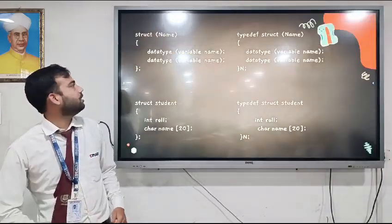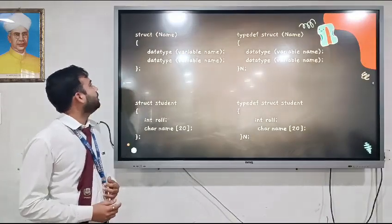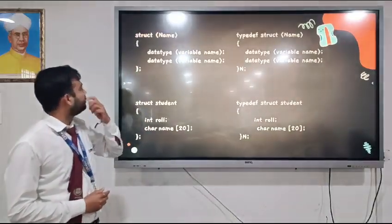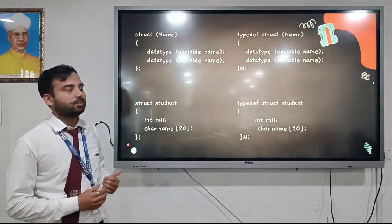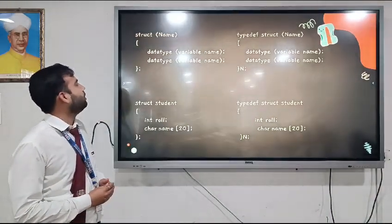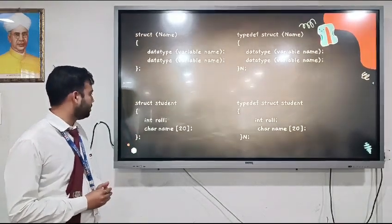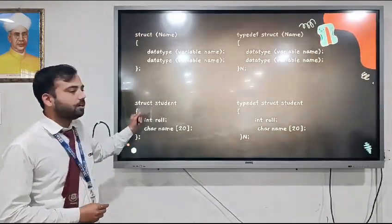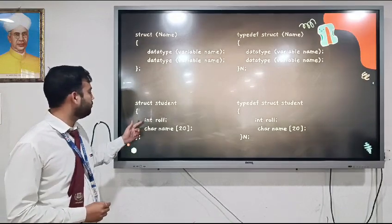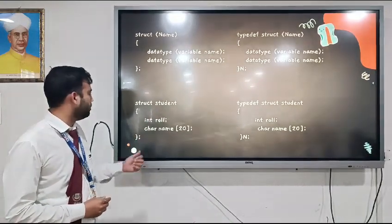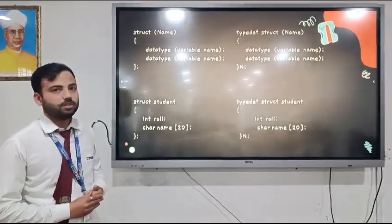Now we are moving to the syntax and the example of the structure. Here we can see the syntax of the structure. First, we have to write struct and the name of the structure. After that, we write data type and the variable. In the example, we have created a structure called student in which we are going to store roll number of the student and the name of the student.